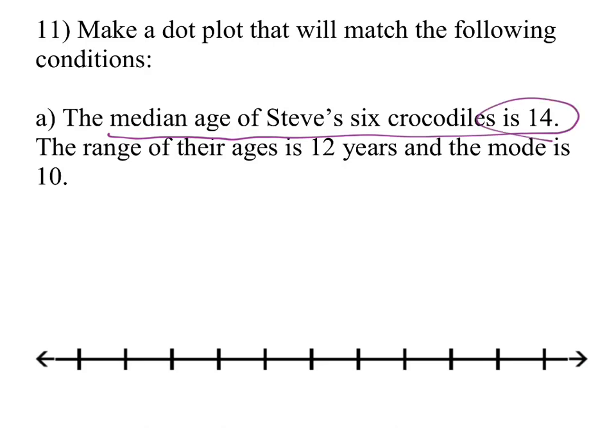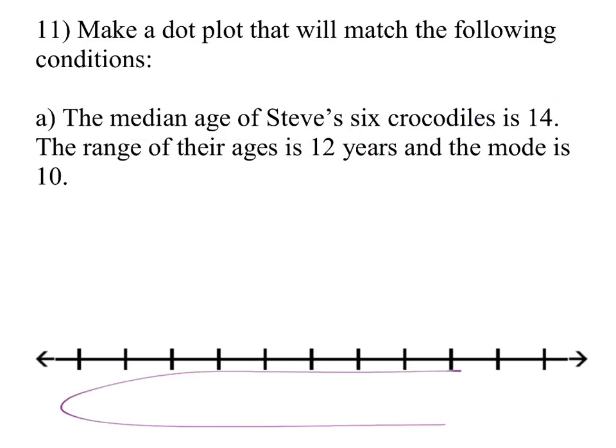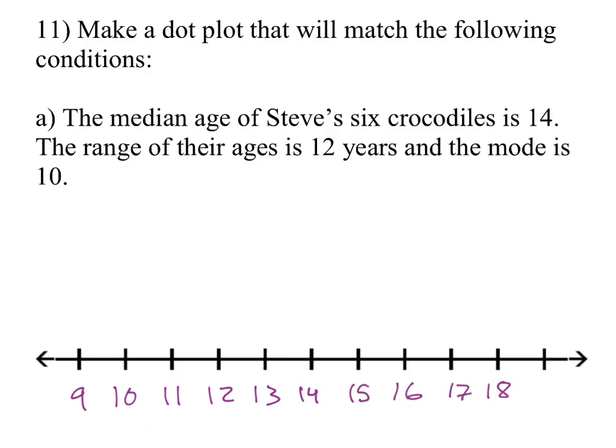But yeah, you're going to make a dot plot that has these conditions. The median is 14. The range is 12. And then the mode is 10. So it's looking like I got ages here of crocodiles. And I need to figure out a dot plot that meets these conditions. So the median age is 14. I'm going to have to be 12. And the mode is supposed to be 10. So let's just go through and put some numbers here so you can see them.